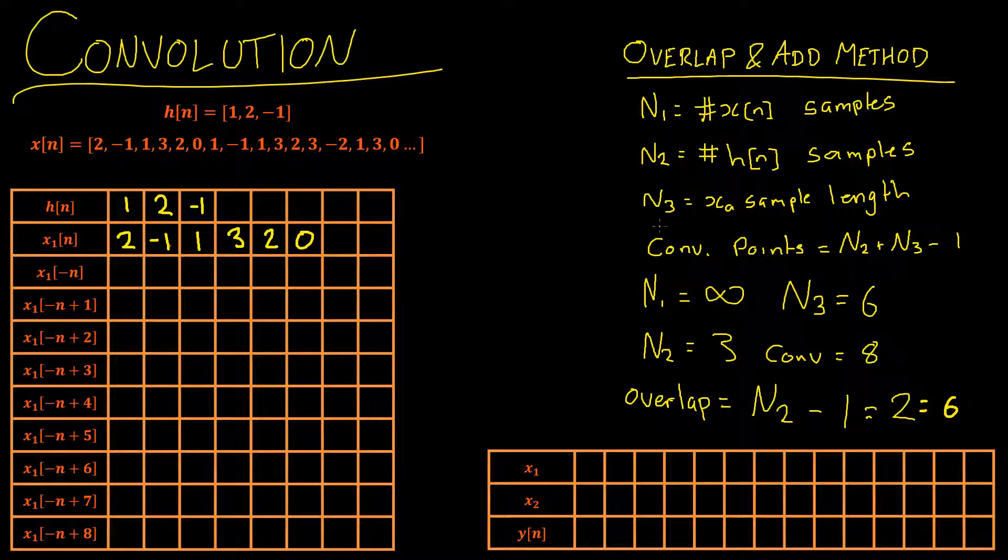Then you essentially get to pick the value for N3. A typical rule of thumb is it should be approximately equal to that of N2. So we are going to choose a value of 6 which is approximately equal to 3. Essentially anything in the neighborhood will work and we're choosing that just because it makes the convolution number nice. Next is the number of convolution points in our convolution and that can be given by N2 plus N3 minus 1.